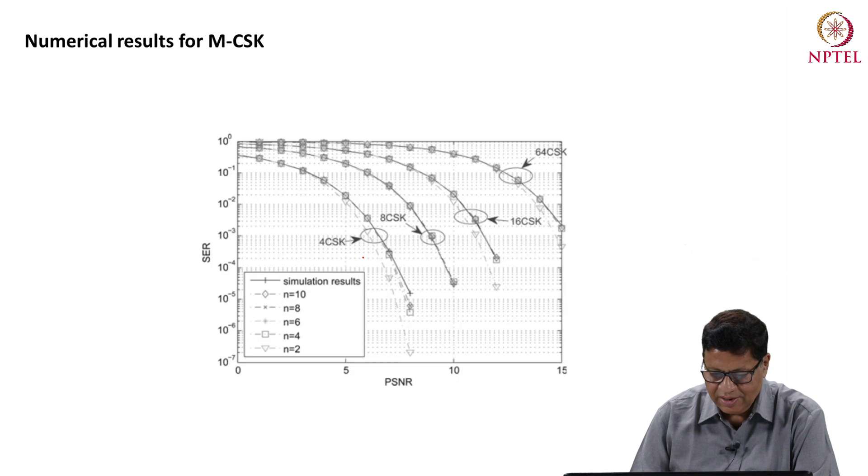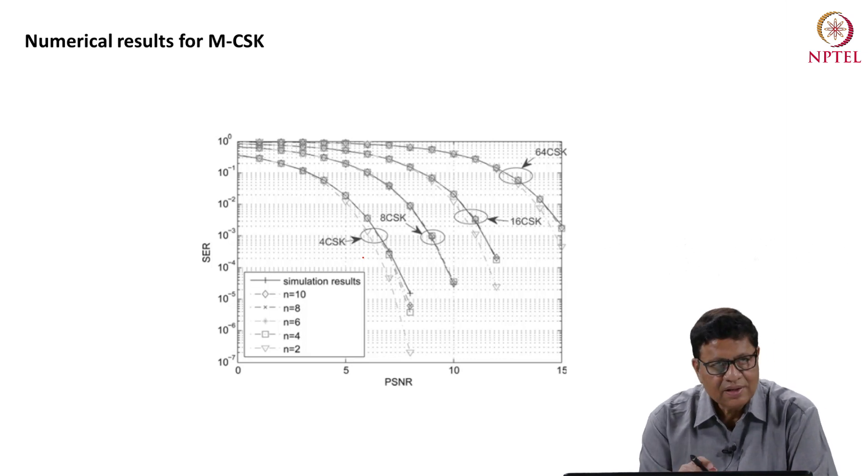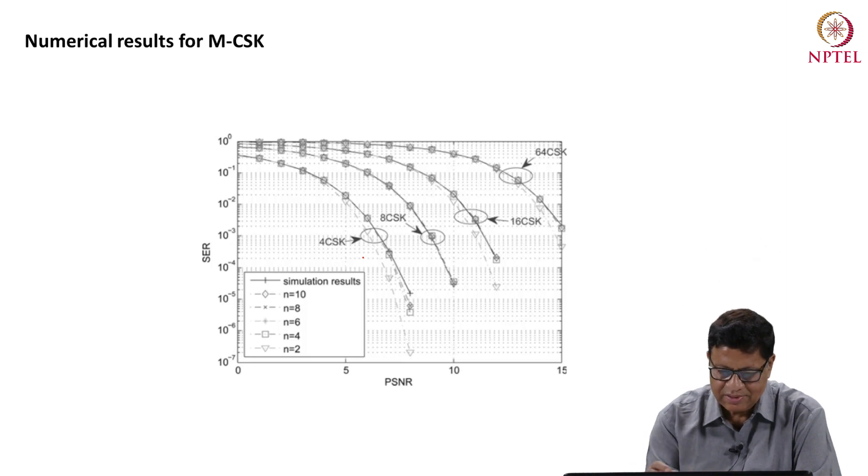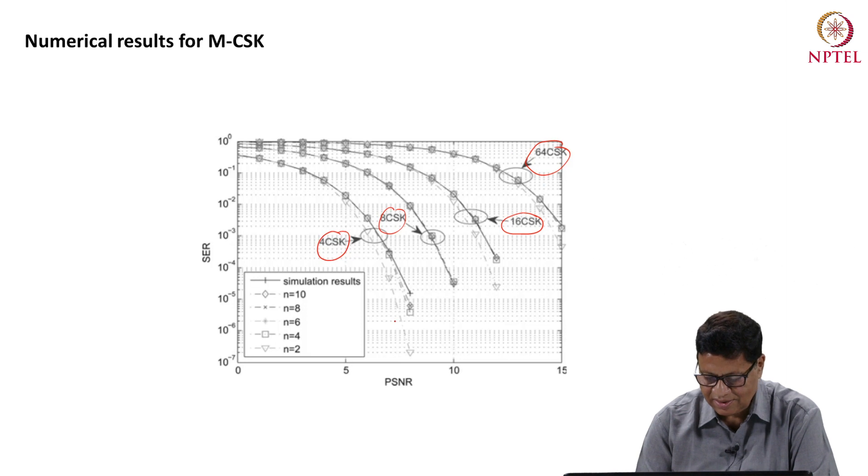And if I plot those curves because that integral is difficult to solve, you have to solve it numerically and this is a result for different CSK. This is 4 CSK, 8 CSK, 16 CSK and 64 CSK and these are the simulation and analytical results.